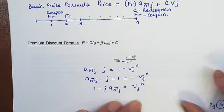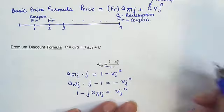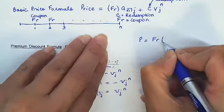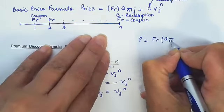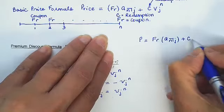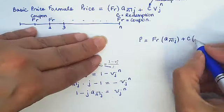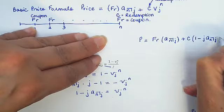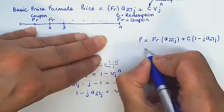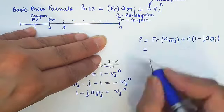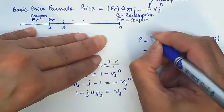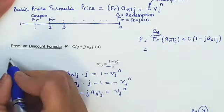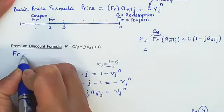So now I'm going to put this VJ to the N into the basic price formula. Let's do it right now. 1 minus J A angle NJ. So this now is equal to, by the way this FR is equal to CG, right? You remember that? Let's write it here.